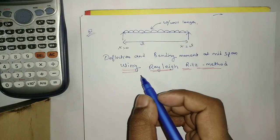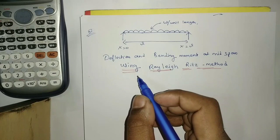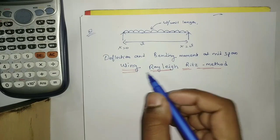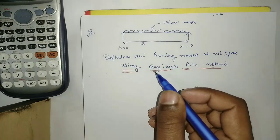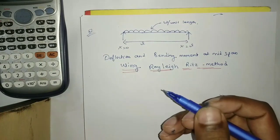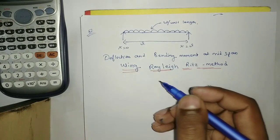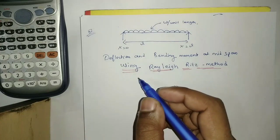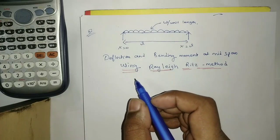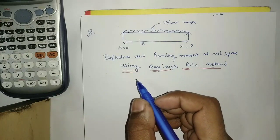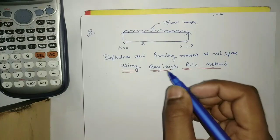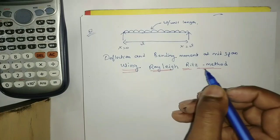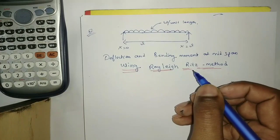Today, we will see how deflection of a beam or bending is related to the Rayleigh-Ritz Method. This is a finite element method — a topic of the Rayleigh-Ritz Method.